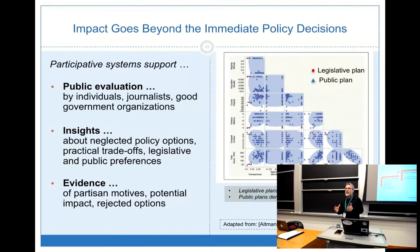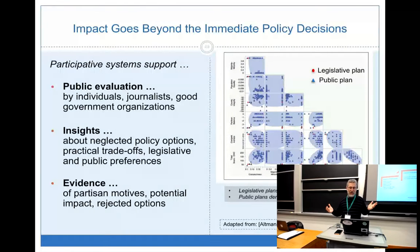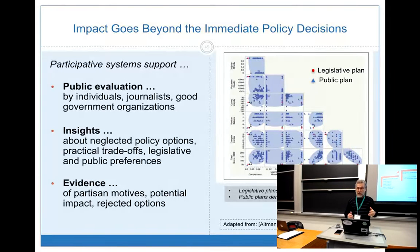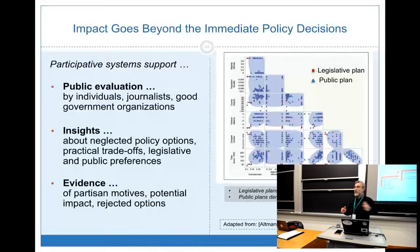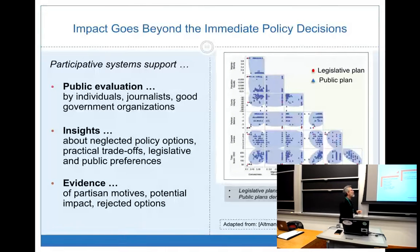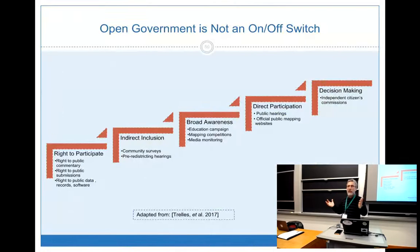Open government is not an on-off switch — this is part of a ladder to participation. It starts with understanding that you have a right, being included in information gathering, going to awareness, and then to direct engagement. For the most part, redistricting has not involved decision making at the public level. Using this software, we and others have been successful in moving toward more awareness and moving some participants to more direct participation. Sometimes that has affected the process — sometimes plans have been adopted directly, like in city councils. Sometimes the courts have taken notice.